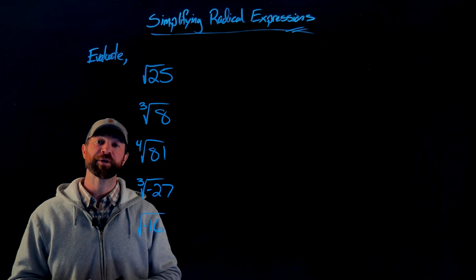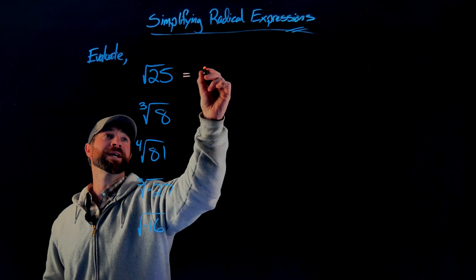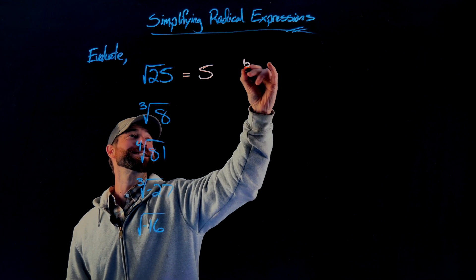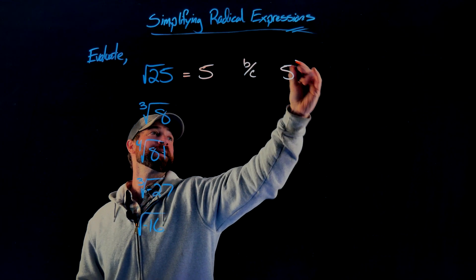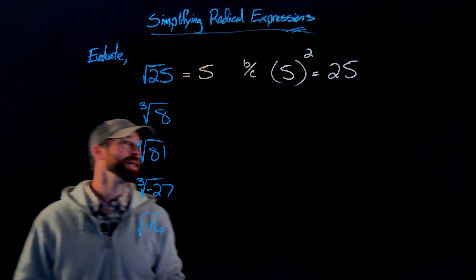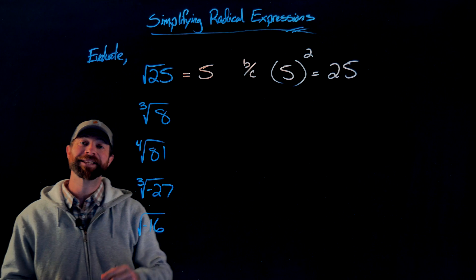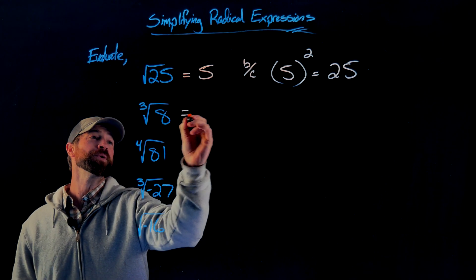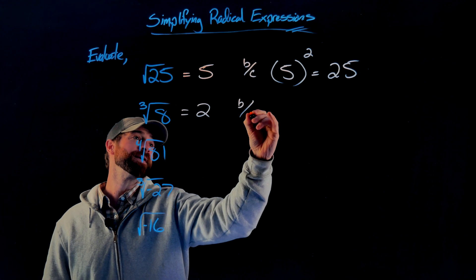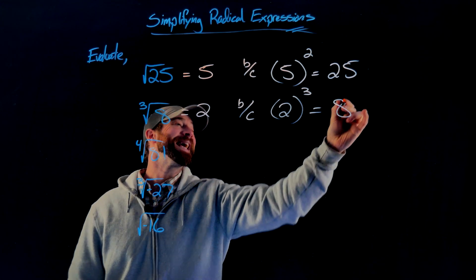First, let's talk about a few of these with just numbers. The square root of 25 is 5, because 5 squared equals 25. In the same way, the cube root of 8 is 2, because 2 to the third power equals 8.